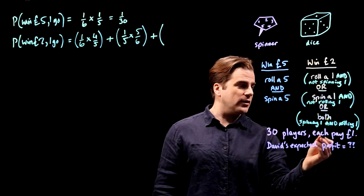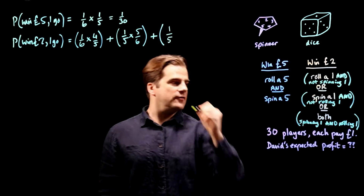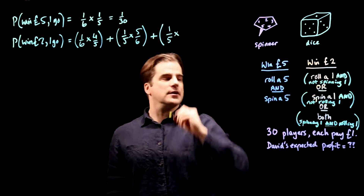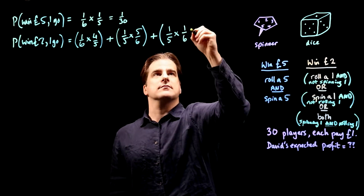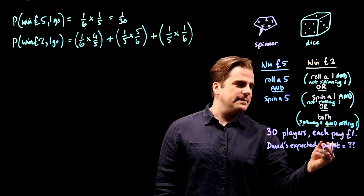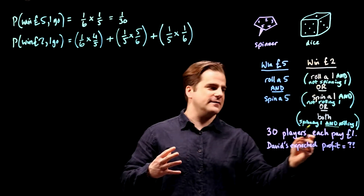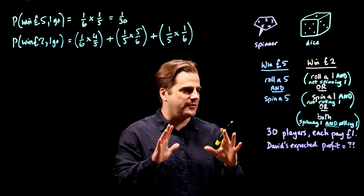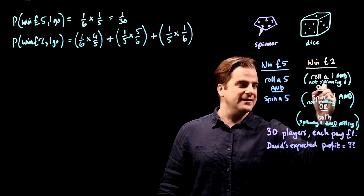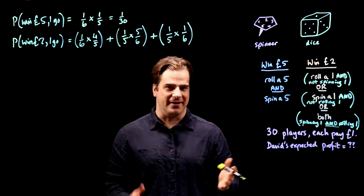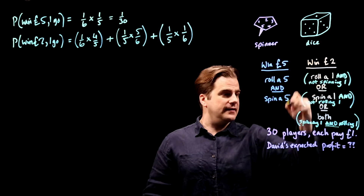Spinning a one is one in five. And — meaning times — not rolling a one means rolling a two, three, four, five or six, so that's five sixths on the dice. Or both: spinning a one and rolling a one — spinning a one is one in five, and rolling a one is one in six, so that's one fifth times one sixth. And with probabilities, 'and' means multiply and 'or' means add.